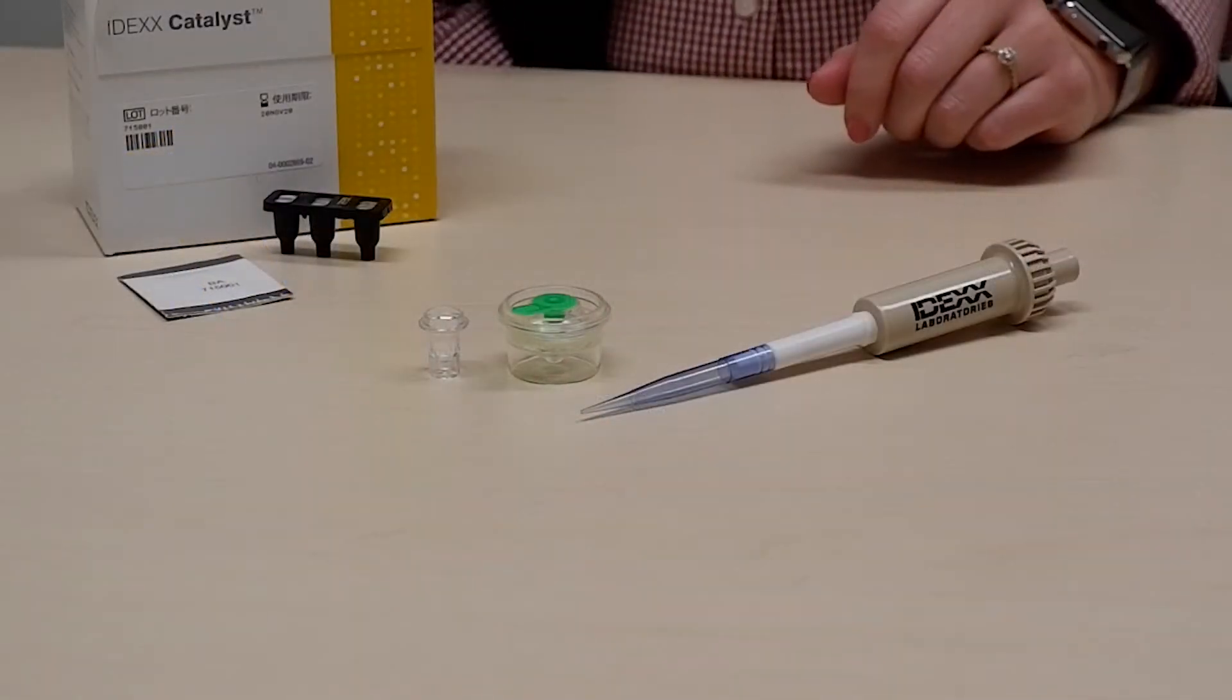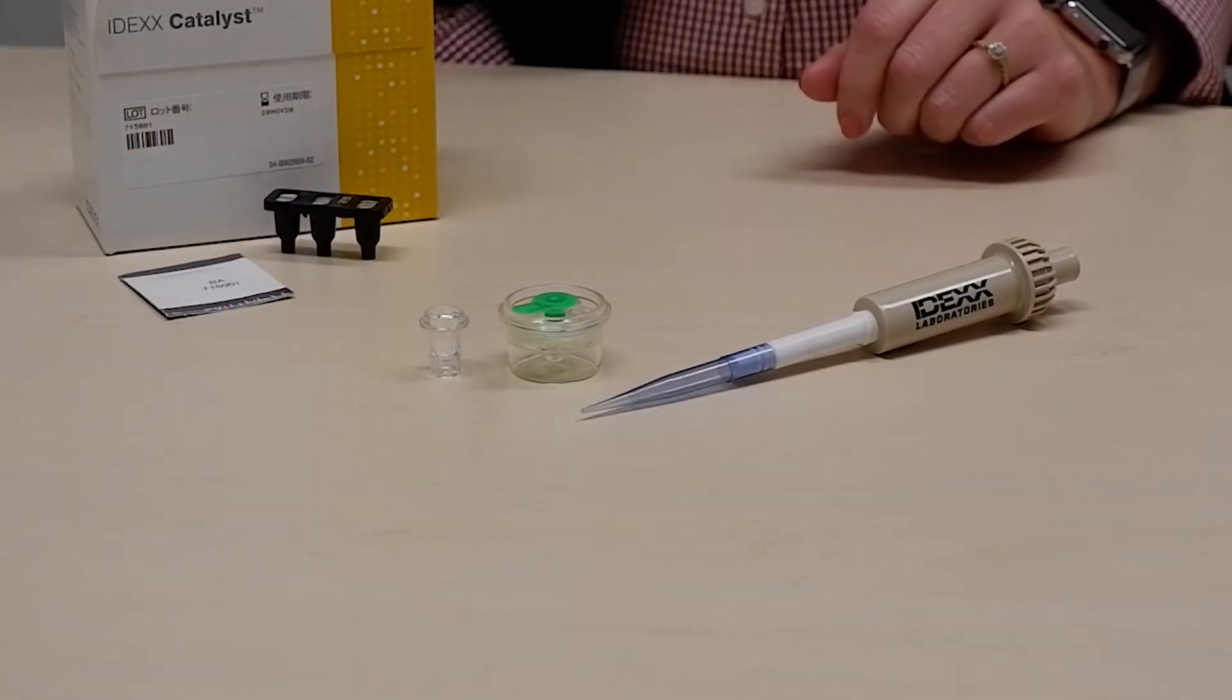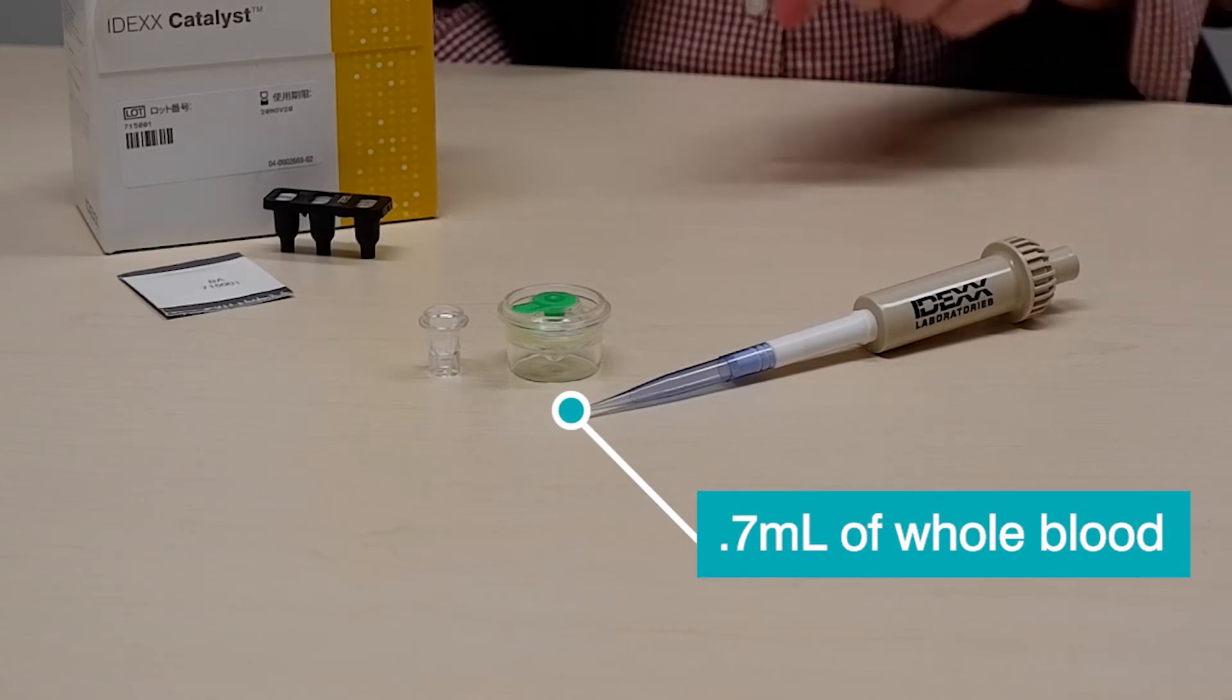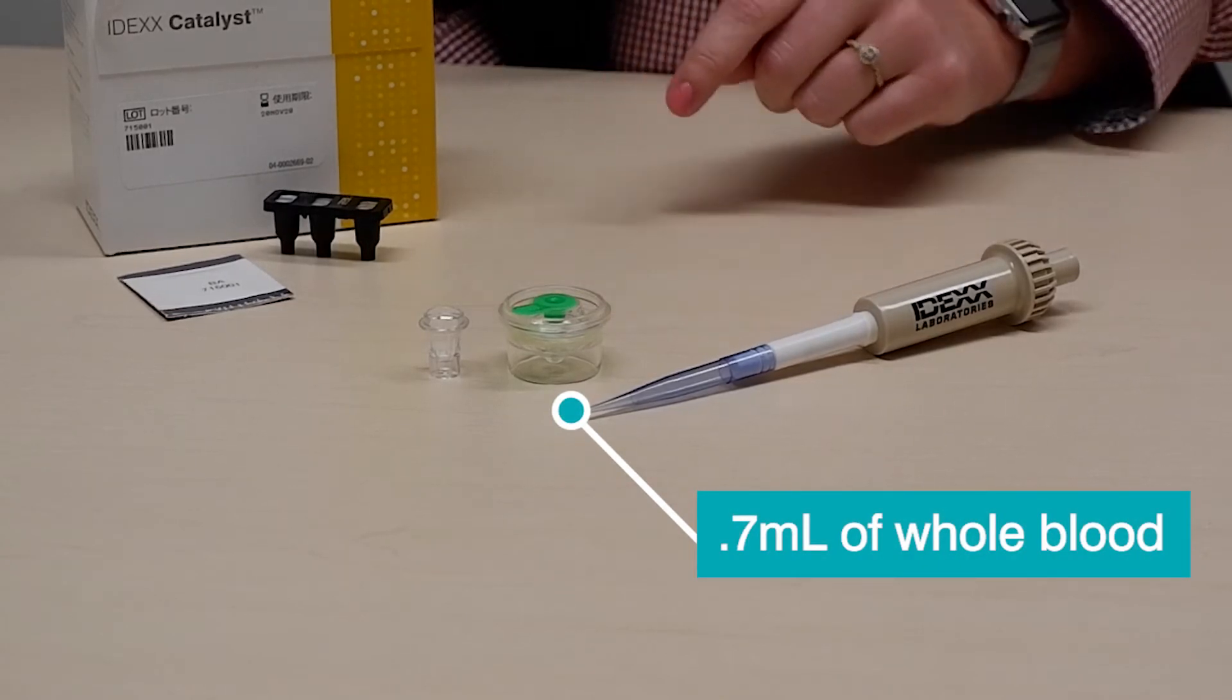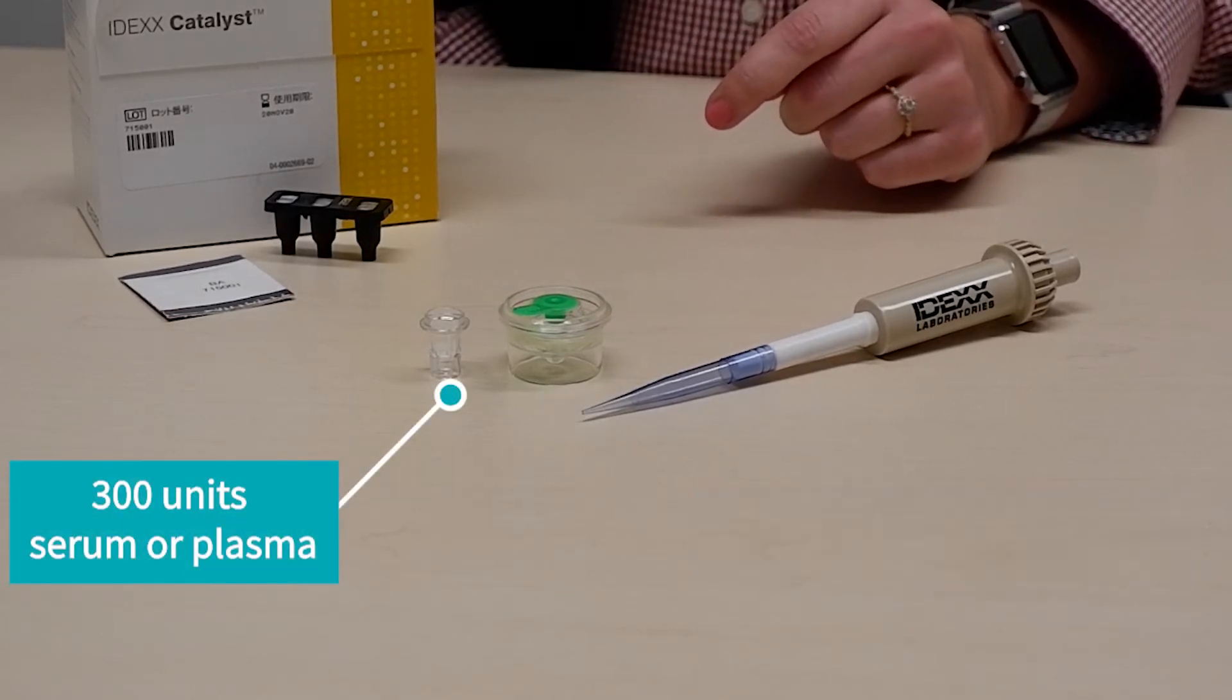The IDEX catalyst bile acids test can be run with 0.7 mils of whole blood using a lithium heparin separator or 300 units of serum or plasma using the sample cup.